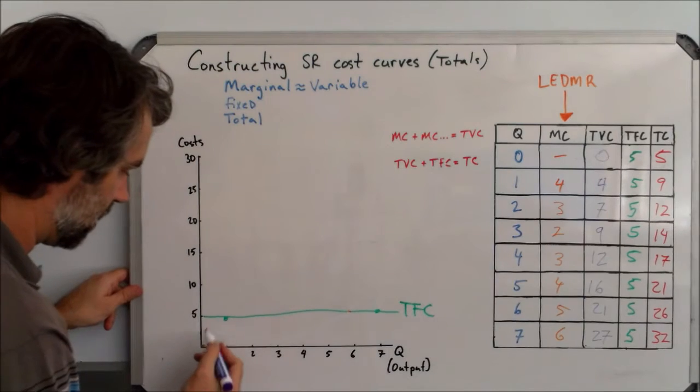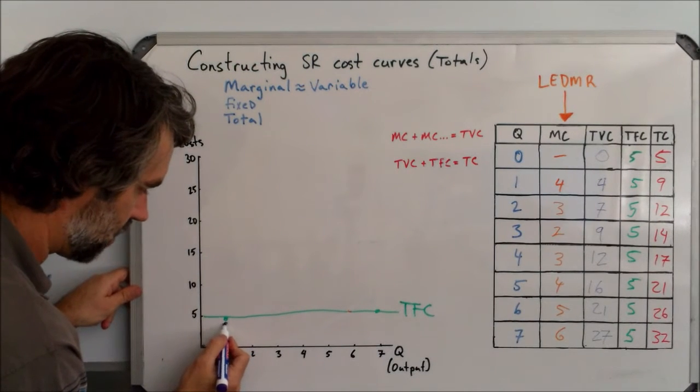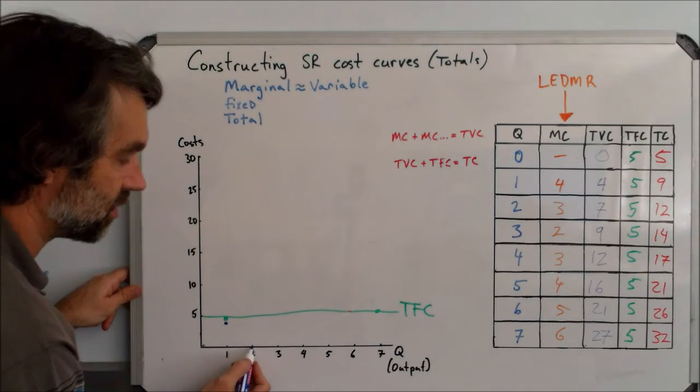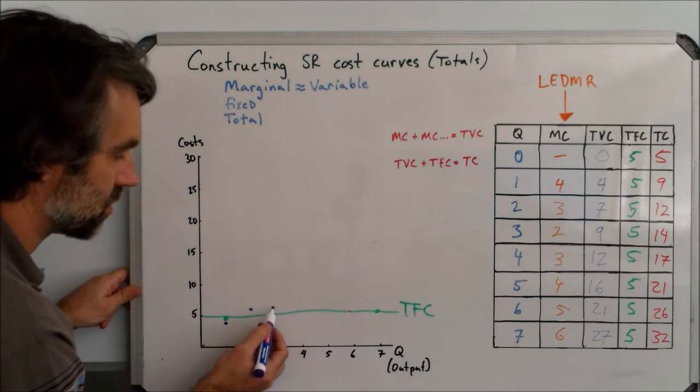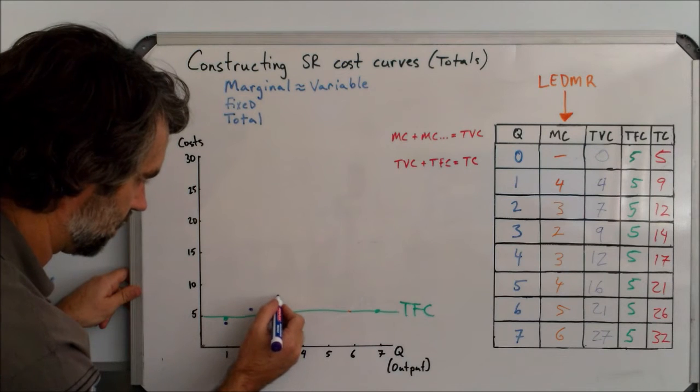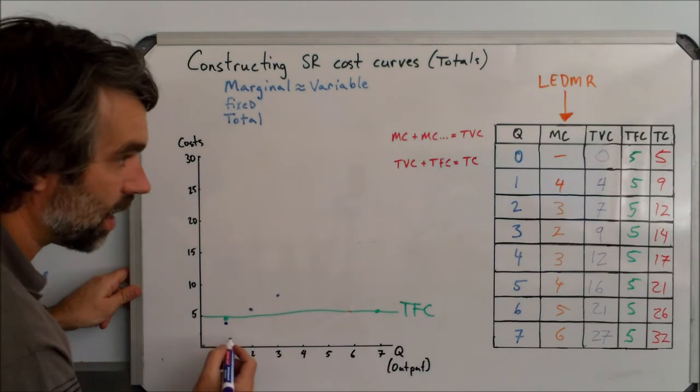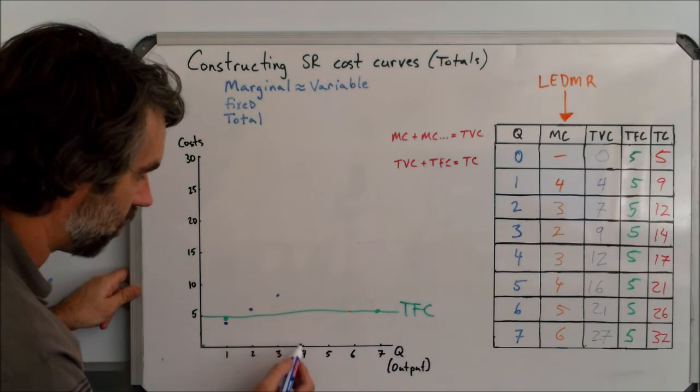When the quantity is one, these come up to four there. When the quantity is two, they go up to seven, which is about there. When it's three, they go up to nine. And then when it's four, they go up to 12.